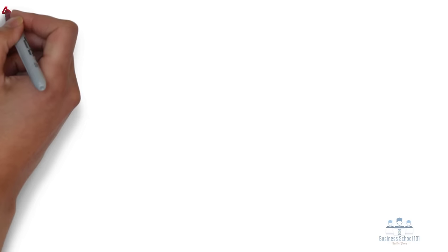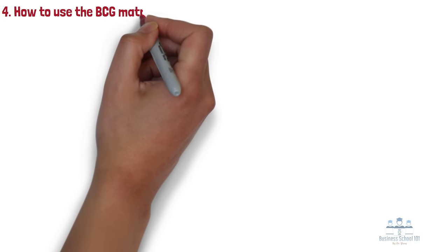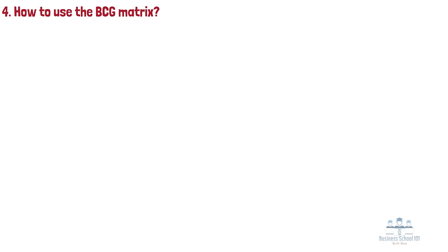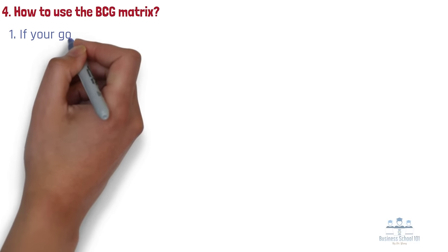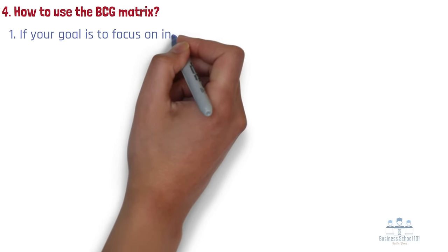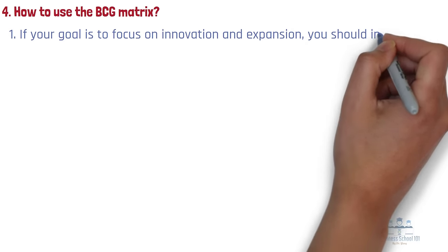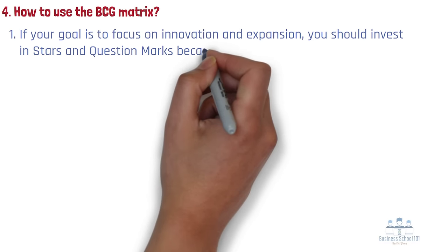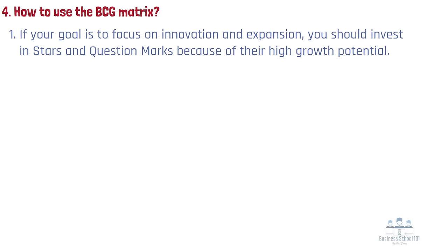Section 4: How to use the BCG matrix. The BCG matrix can help companies identify which products they should prioritize and which need to be cut altogether. Here are four strategies to use the BCG matrix. Number one: if your goal is to focus on innovation and expansion, you should invest in stars and question marks because of their high growth potential. Sometimes you may be able to push a question mark into a star, and later a cash cow, by investing more in it.